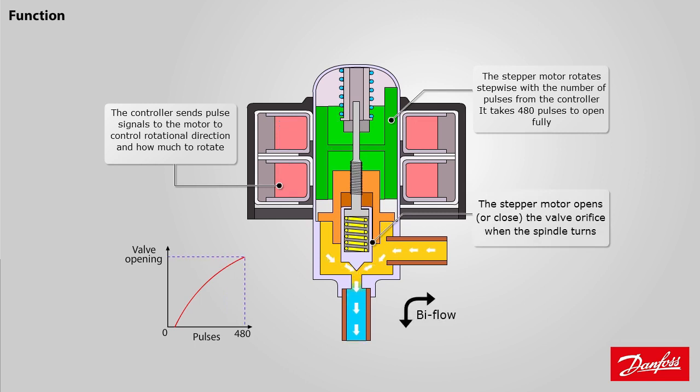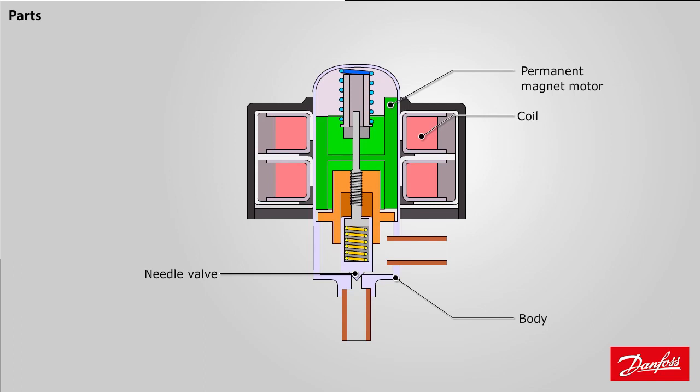When superheat is low, the EEV may respond by closing to allow less refrigerant to flow into the evaporator to maintain the desired cooling capacity and prevent excessive liquid refrigerant from entering the compressor.